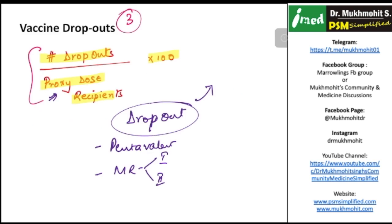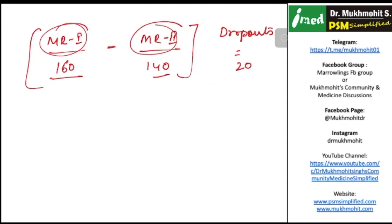Once I get the dropouts, this will be the numerator of my formula. So dropouts is equal to 20, and what is the proxy dose recipients? The proxy dose recipient, that is the first dose recipient, was 160. So the dropout rate will be calculated as 20 divided by 160 into 100, so that will come out to 12.5%.